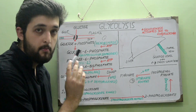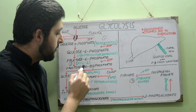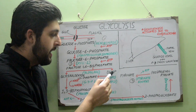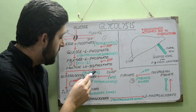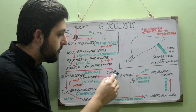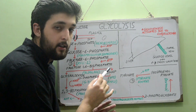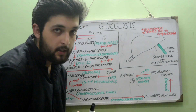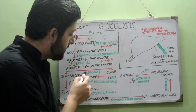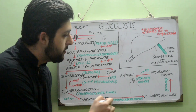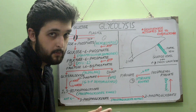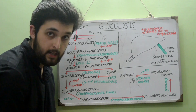Fructose-1,6-bisphosphate, a six-carbon compound, is cleaved by the enzyme aldolase into two three-carbon compounds: glyceraldehyde-3-phosphate (G3P) and dihydroxyacetone phosphate (DHAP). DHAP is not directly used in glycolysis; it is converted back to glyceraldehyde-3-phosphate by triose phosphate isomerase — 'triose' referring to its three-carbon structure.